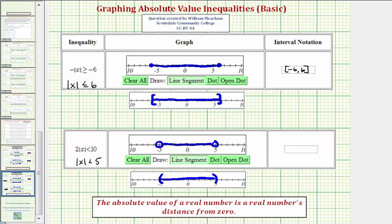The interval is from negative five to five using interval notation. The endpoints are not included, so we use rounded parentheses on each side rather than square brackets.